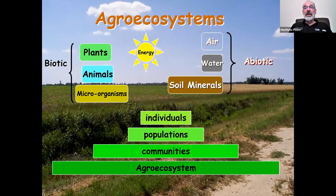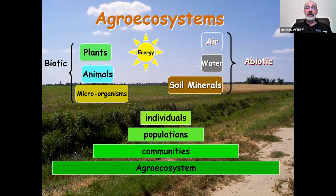A pasture is a managed ecosystem — what we call an agro-ecosystem — that includes the biotic components, which are the living components, and the abiotic, which are the non-living components. The abiotic includes air, water, soil, and minerals. The biotic, or living part, includes the animals, the plants, and the many different types of microorganisms present in the pasture. These are organized into populations, then communities, and together form that bigger agro-ecosystem. We can study individual components, but to have real impact we need to understand that they all work together.